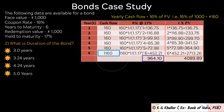To get the duration of the bond, put the value of sigma(t × PV) = 4089.89 in the numerator and market price = 964.10 in the denominator. Duration = 4089.89 divided by 964.10 equals 4.24 years. Thus the correct option for this question is option C.